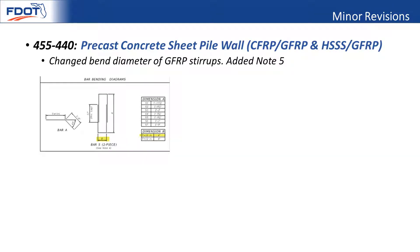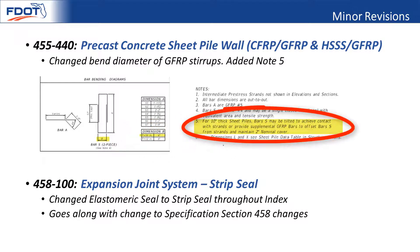We had to make a minor change to this dimension for the 10-inch thick sheet pile walls because the tolerances for bending the FRP is a six-inch minimum diameter. There is also note five to tell you how to offset it — twist it a little bit — if you want to tie to the strands.